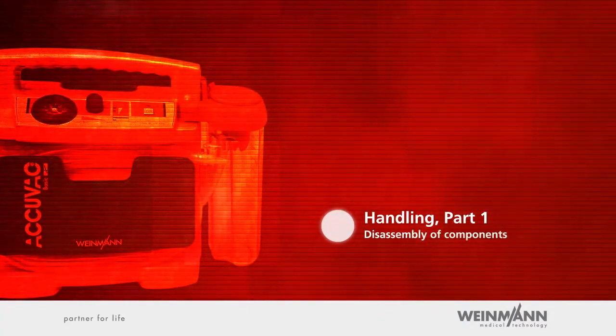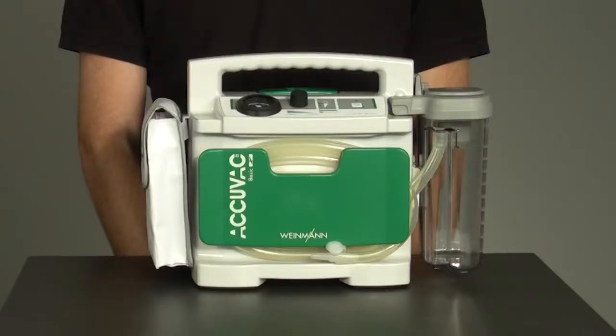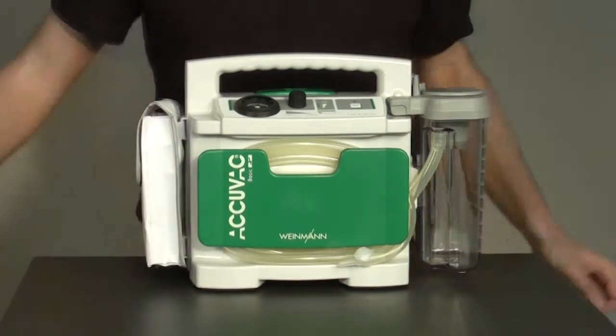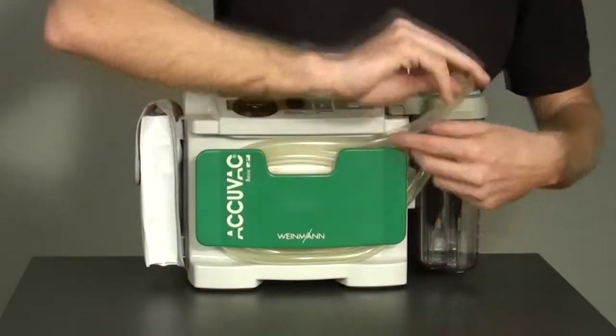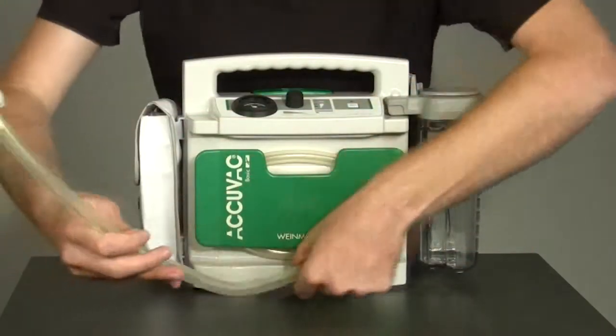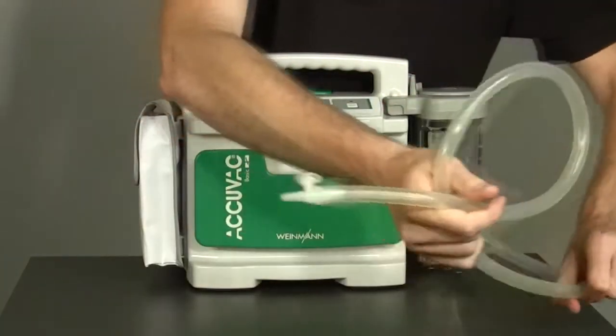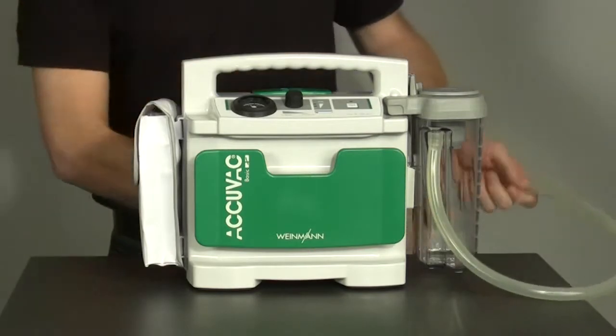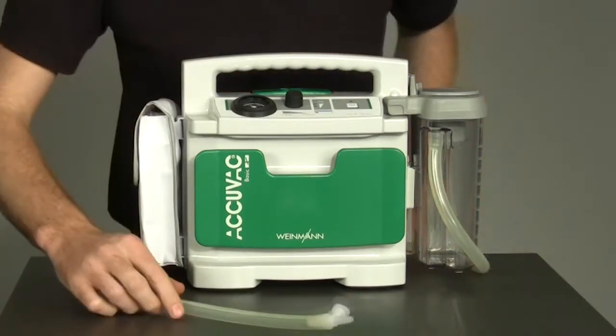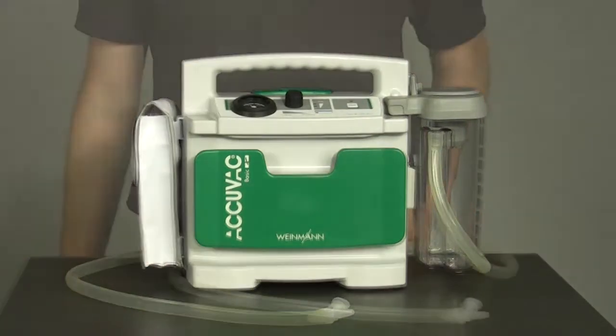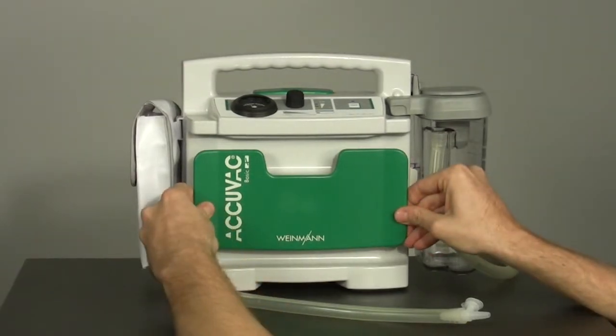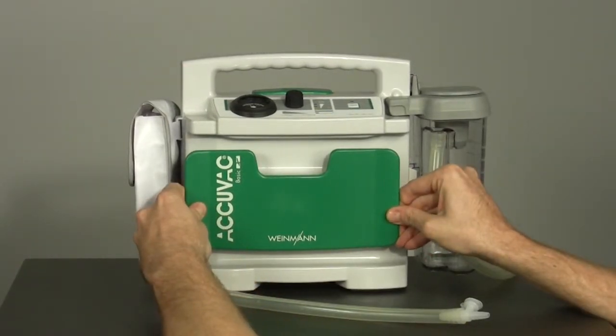Handling, part one: disassembly of components. For cleaning purposes, the major components can be disconnected from the motor unit. First, unwind the suction tube from the tube holder plate. Push the plate toward the left. You will have to overcome some resistance until you hear a click.